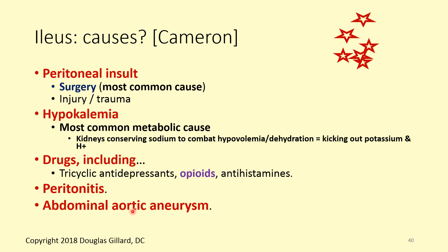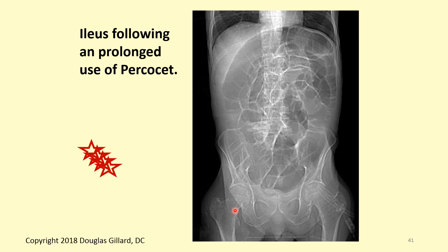An abdominal aortic aneurysm that ruptures and leaks blood can stimulate a shutting-off of the autonomic nervous system, potentially causing ileus. Here's an example: a chronic pain patient on Percocet comes in saying he hasn't pooped in days. His stomach is puffed up, and the X-ray shows massive intestinal gas with the transverse colon pushed way up — a complete mess with nothing working. He needs to be referred to the hospital right away.